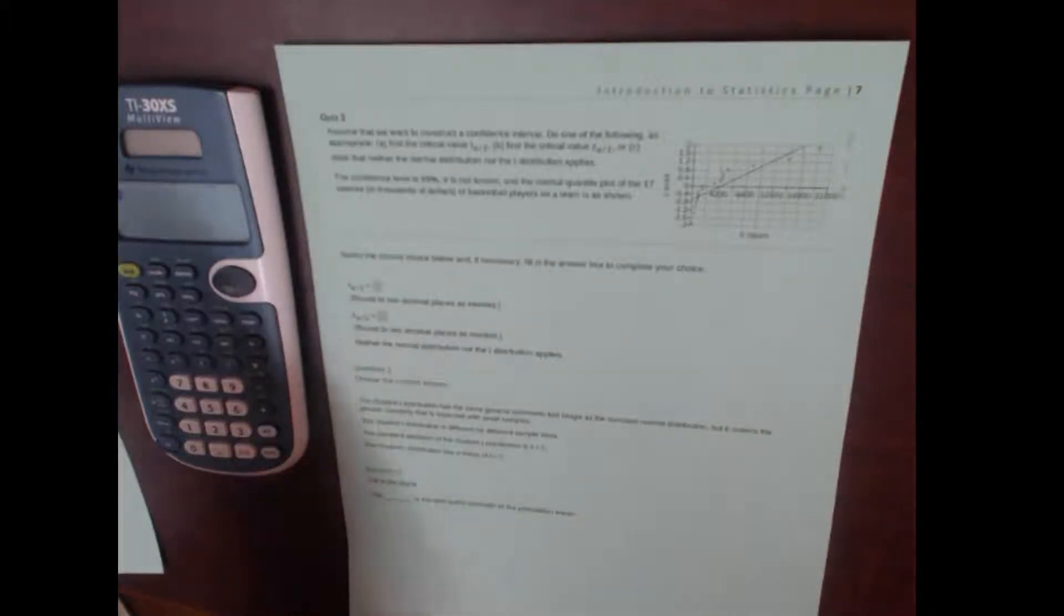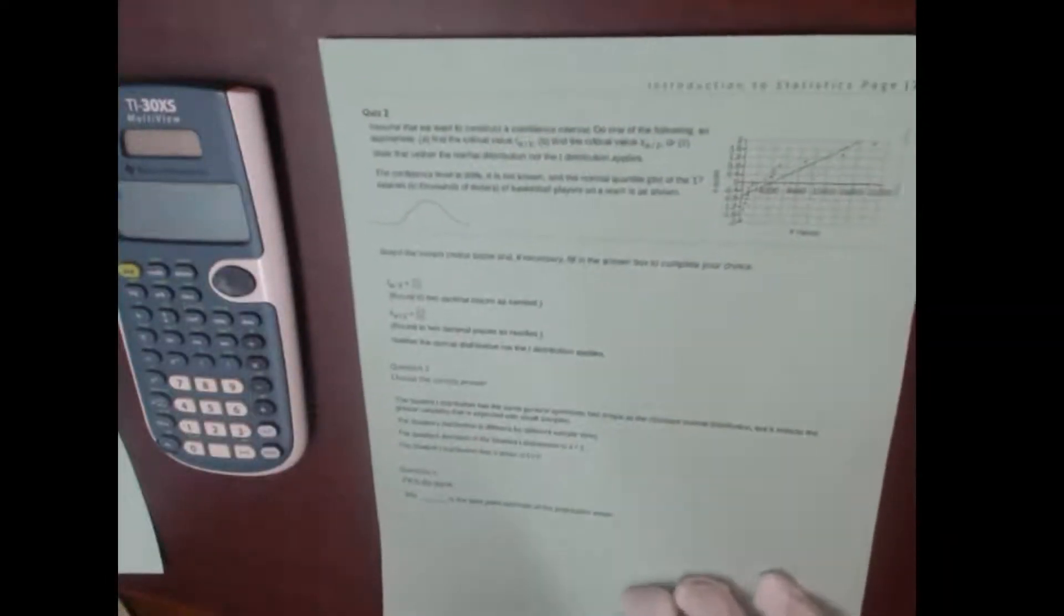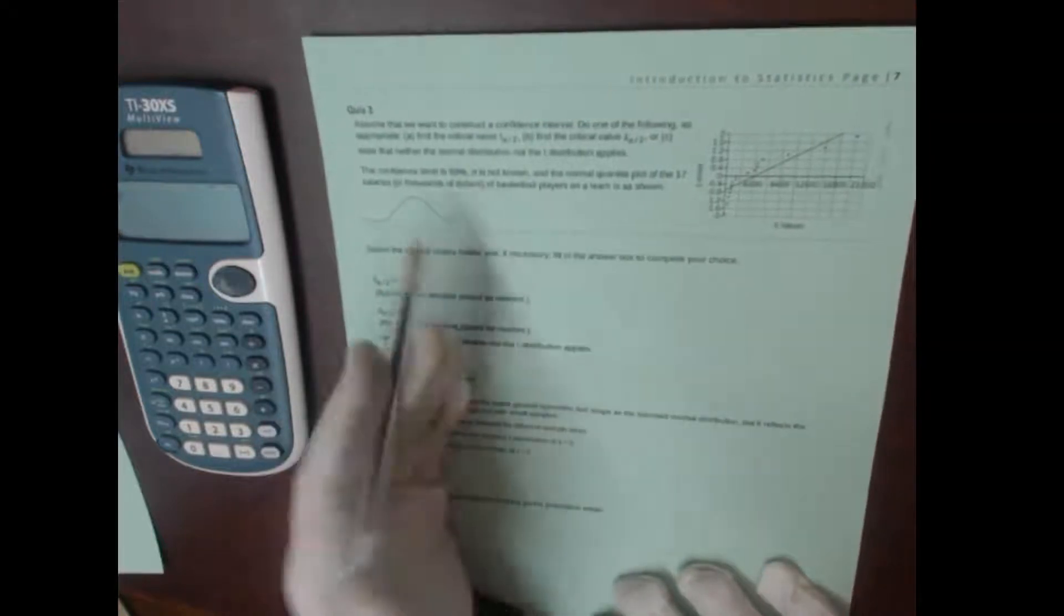So the question is, you pull a sample that's probably kind of small, and the question is, is it a normal distribution? Is it a bell curve? Does your data come from a bell curve? And there's actually a test you can do to see if your data is from a bell curve or if it's from some other type of distribution. And that test is called a normal quantile plot.